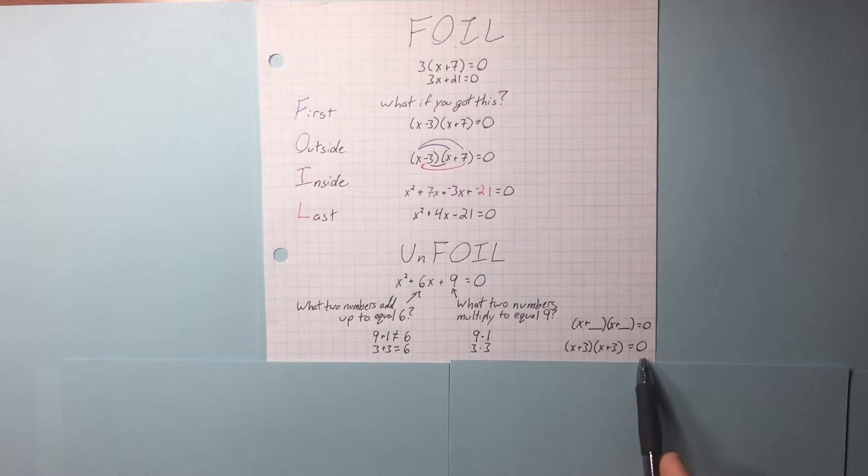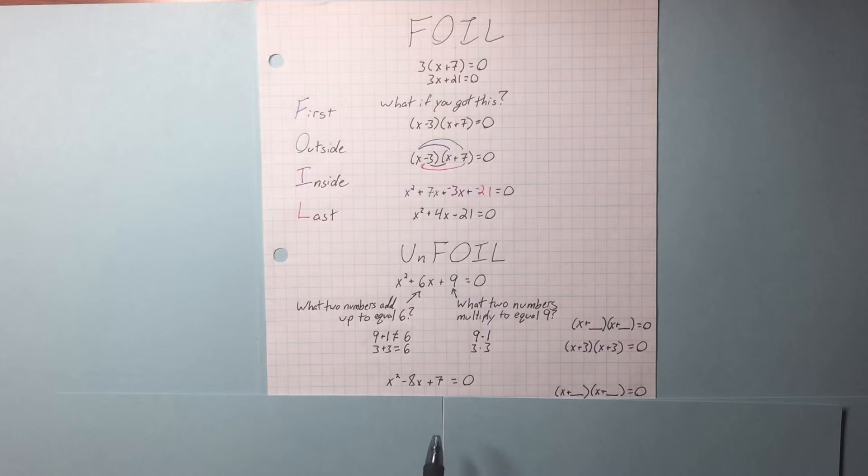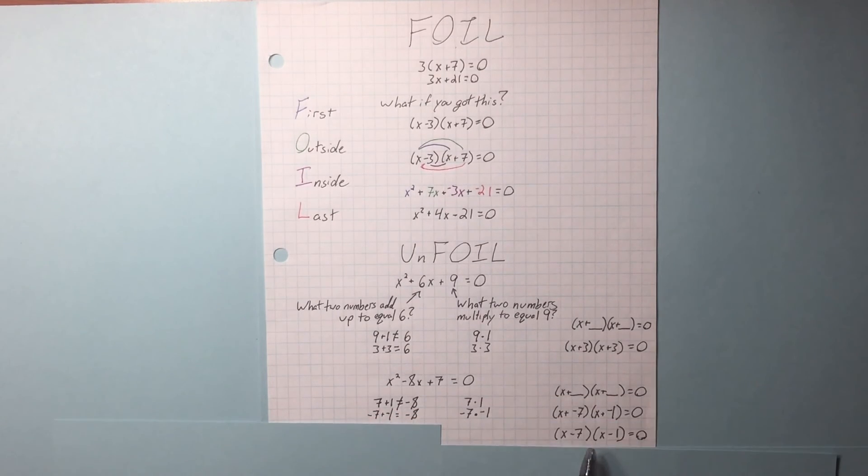This is going to be important later for solving quadratic equations. Let's do another one. x squared minus 8x plus 7. Two numbers that add up to equal negative 8 and two numbers that multiply to equal 7. 7 and 1, they add to equal negative 8. Do not. Negative 7 and negative 1 equal to 7. Those do add together to equal negative 8. We can fill those in for our parentheses. This is us unfoiling this quadratic equation.